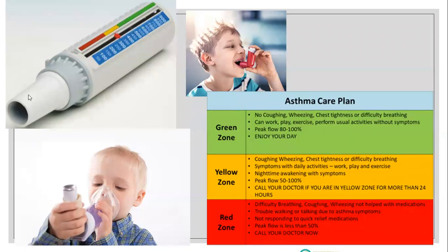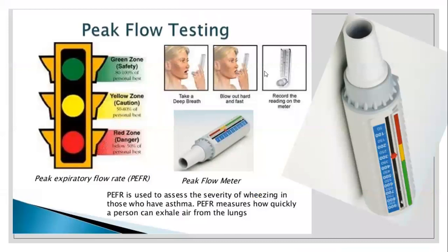Here we can see the first picture of a child using an inhaler, but it is not the accurate way to inhale. In the second picture, a baby uses a spacer device with the inhaler — this is the correct method. First, take a deep breath, then blow out hard and fast, then hold your breath for a few seconds.